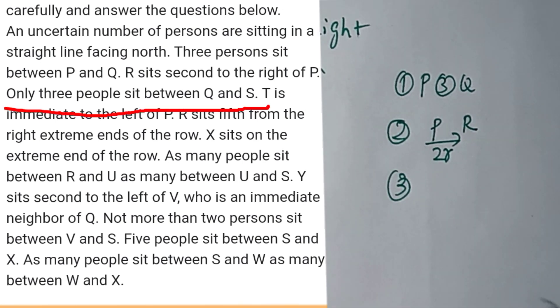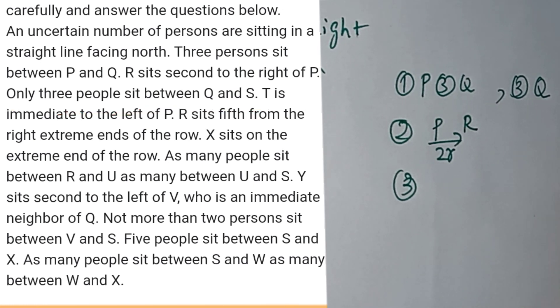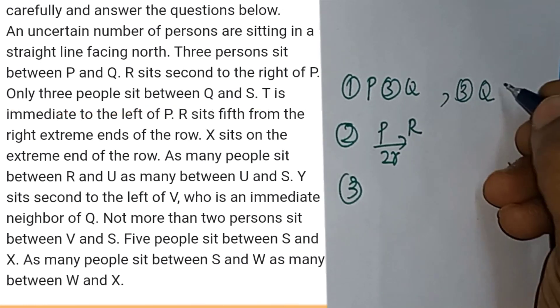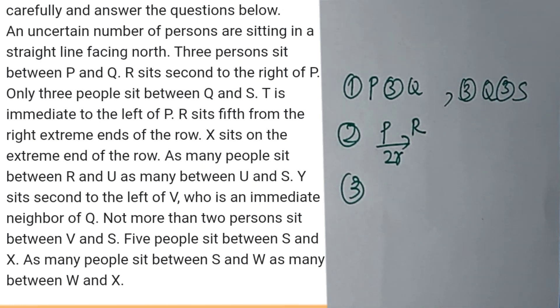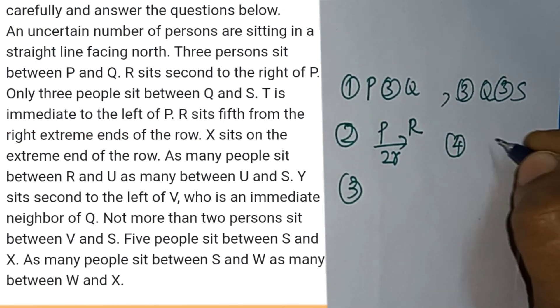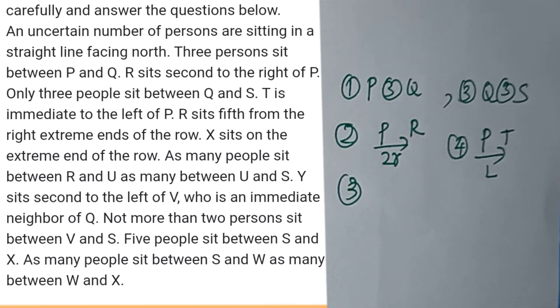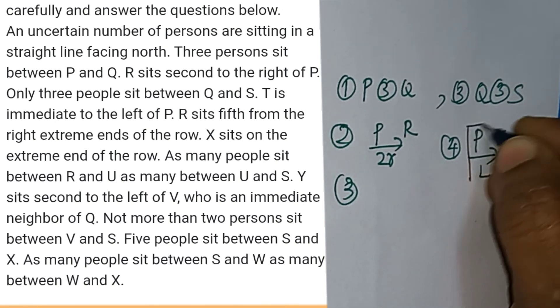The third point is only three people sit between Q and S. The fourth point is T is the immediate left of P. R sits fifth from the right extreme ends of the row. T is immediate to the left of P. This is a clear clue - direct left.